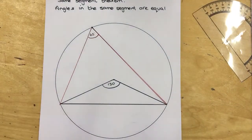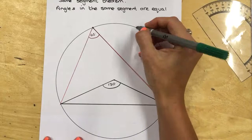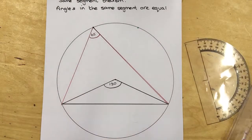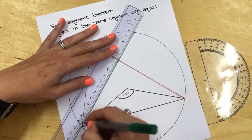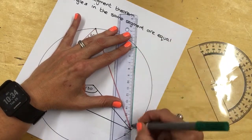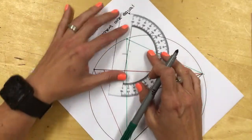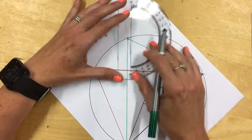Now if I choose another point on the circumference. So that point there. And I apply the same thing. So I join that to the ends of my cord again. And then I measure the angle. Again, 65 degrees.